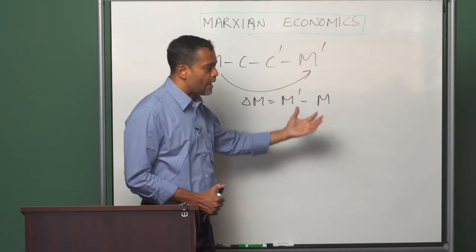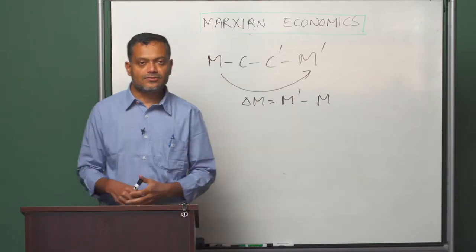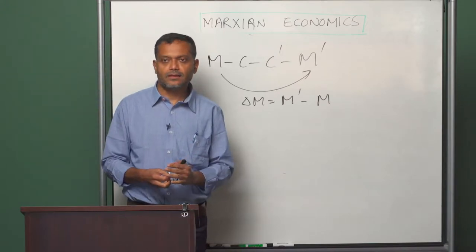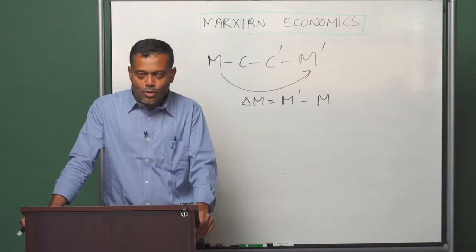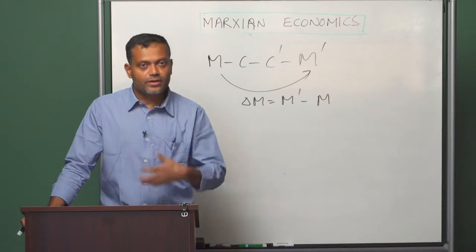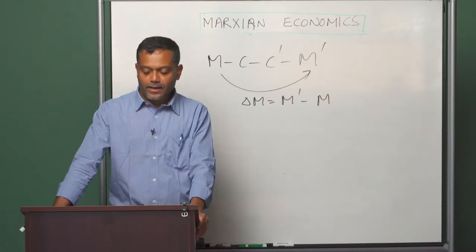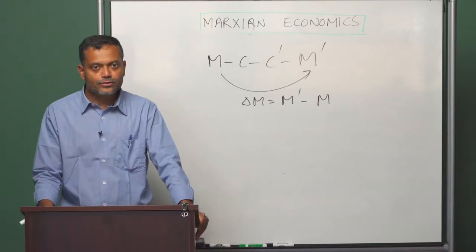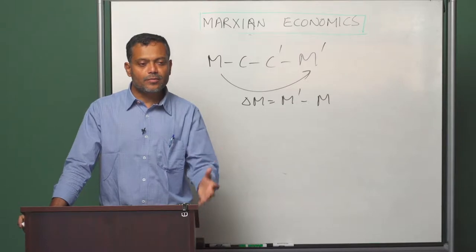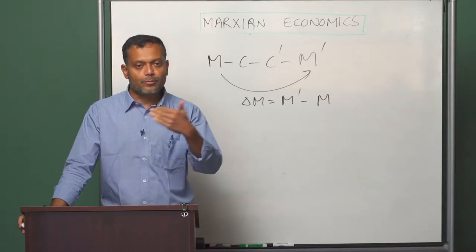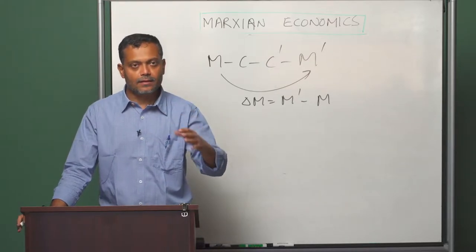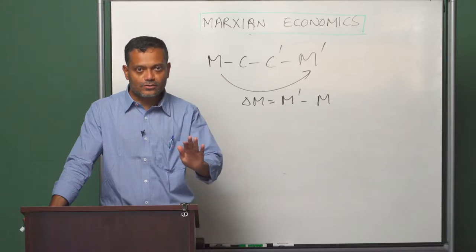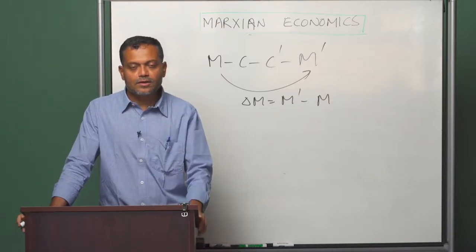Now we want to ask the question: what does the capitalist system do with the surplus value that it has generated? There are two things the capitalist system can do with the surplus value — either it can consume it, or it can invest it. If the capitalist system consumes all the surplus value it has generated, then we have a scenario that Marx refers to as simple reproduction. Simple reproduction means all the surplus value is consumed and therefore the production process carries on at the same scale; the size of the capital involved in the production process does not change.